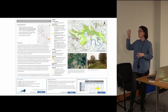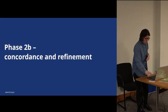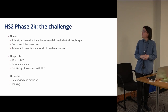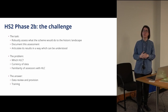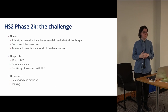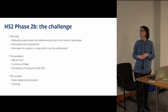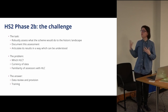This was the foundation for which we then continued on Phase 2b. The task we had was to robustly assess what the Scheme would do to the historic landscape along our route — at this point going from Crewe to Manchester and beyond, and from Birmingham to Sheffield and Leeds and beyond, so quite a large area — and to document the assessment and articulate the results in a way which could be clearly understood.